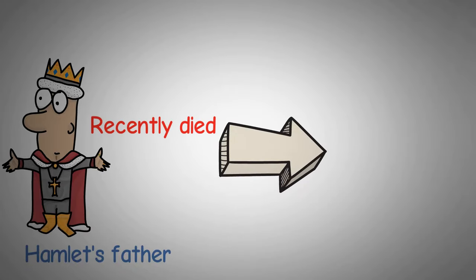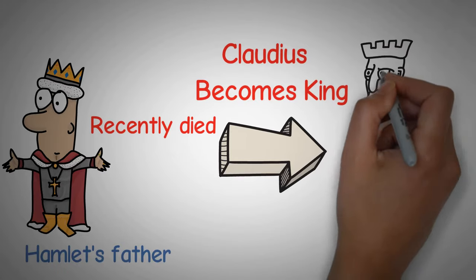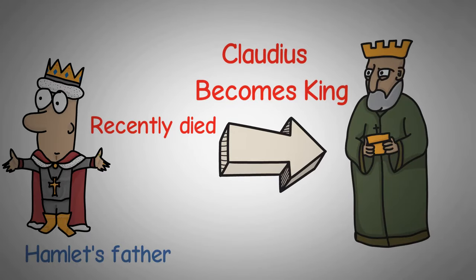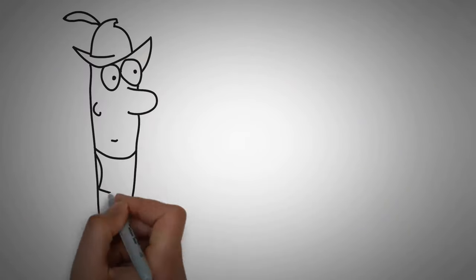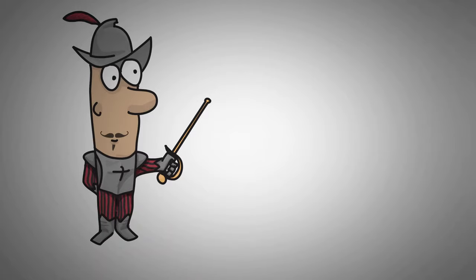Hamlet is quite troubled and suspicious about all this, but there's not much he can do about it, until one night the soldiers keeping watch on the battlements of Elsinore Castle tell him they believe they've seen the ghost of the old dead king. Hamlet waits on the battlements. Eventually, the ghost does come to him and explains that he was indeed murdered by Claudius.